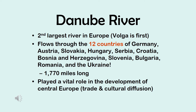If you look at the pictures on the next slide, you'll notice that all the major cities are along the Danube River. Not only does it promote trade, but also cultural diffusion — which is the movement of ideas and economics as well.